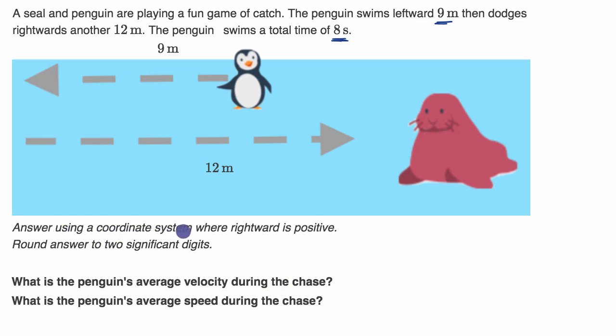They say answer using a coordinate system where rightward is positive and round answer to two significant digits. So pause this video and see if you can figure out the penguin's average velocity during the chase.